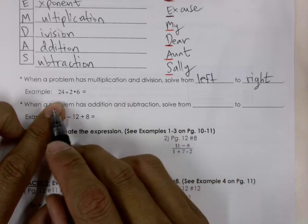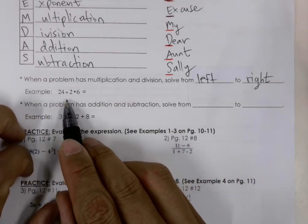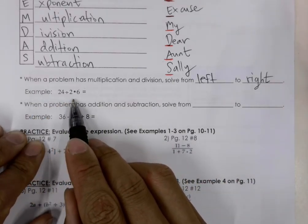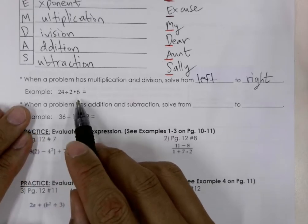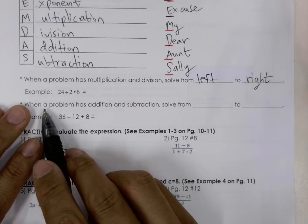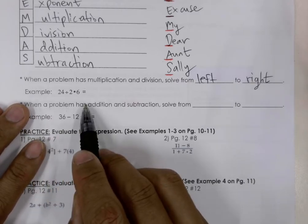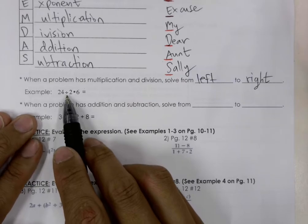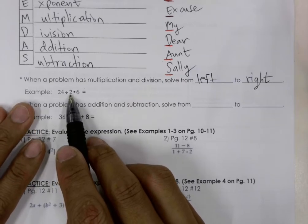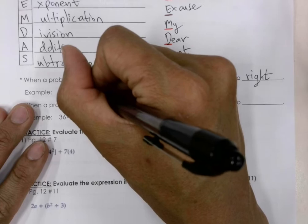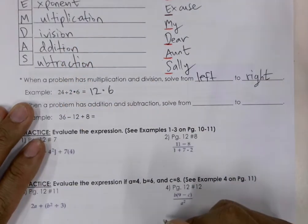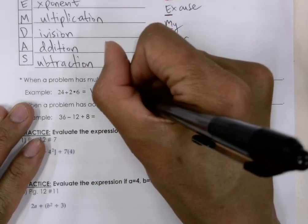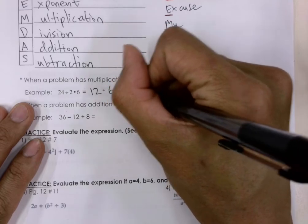For example, we have 24 divided by 2 times 6. So if we're solving this from left to right, we'll do 24 divided by 2, which is 12, times 6. Then we'll do the 12 times 6, and that's equal to 72.